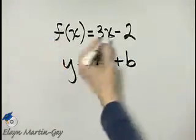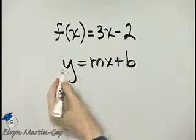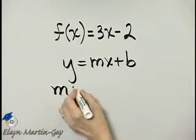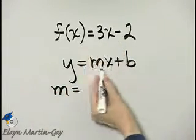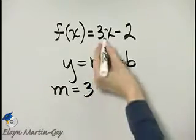So what is the slope of the graph of this function or equation? The slope is the coefficient of x, which in this case is 3.